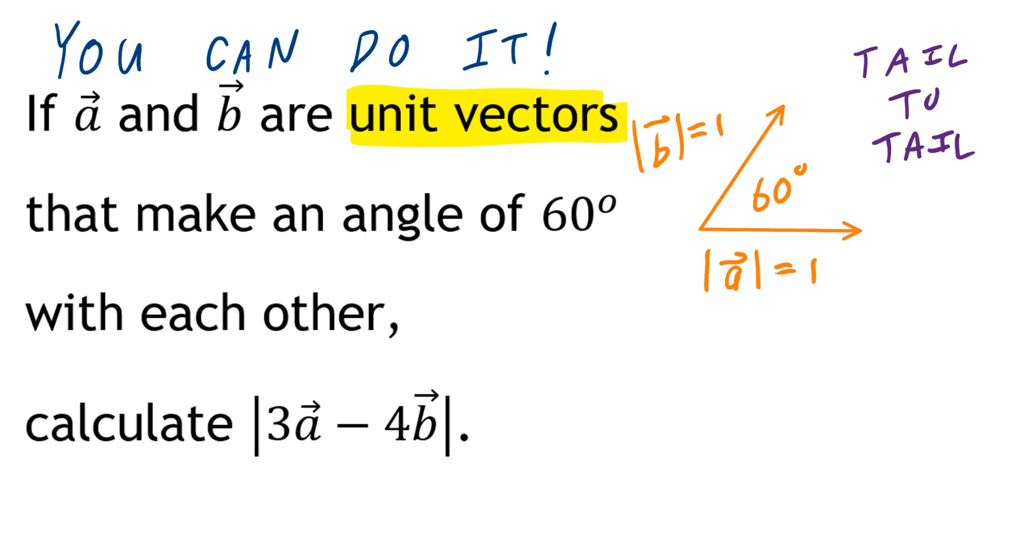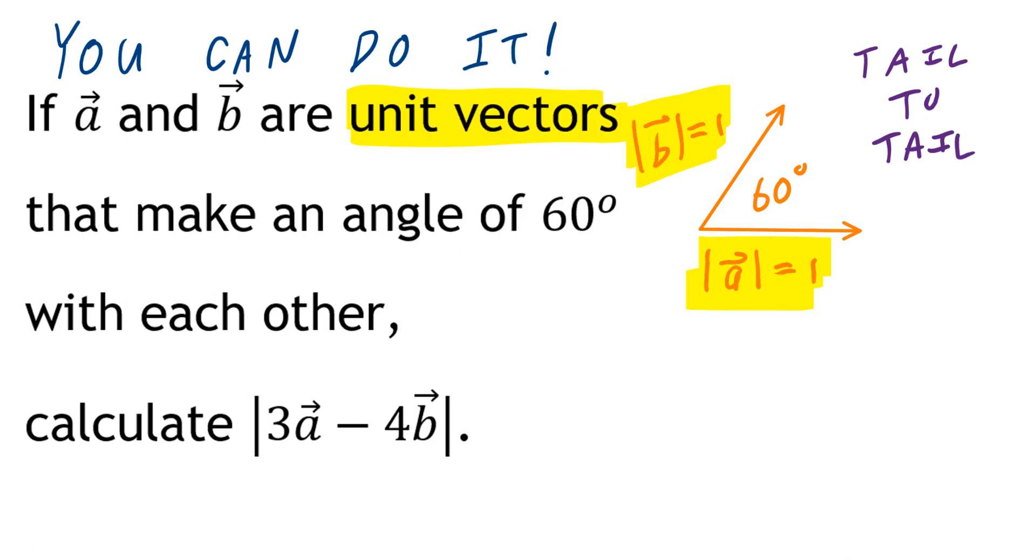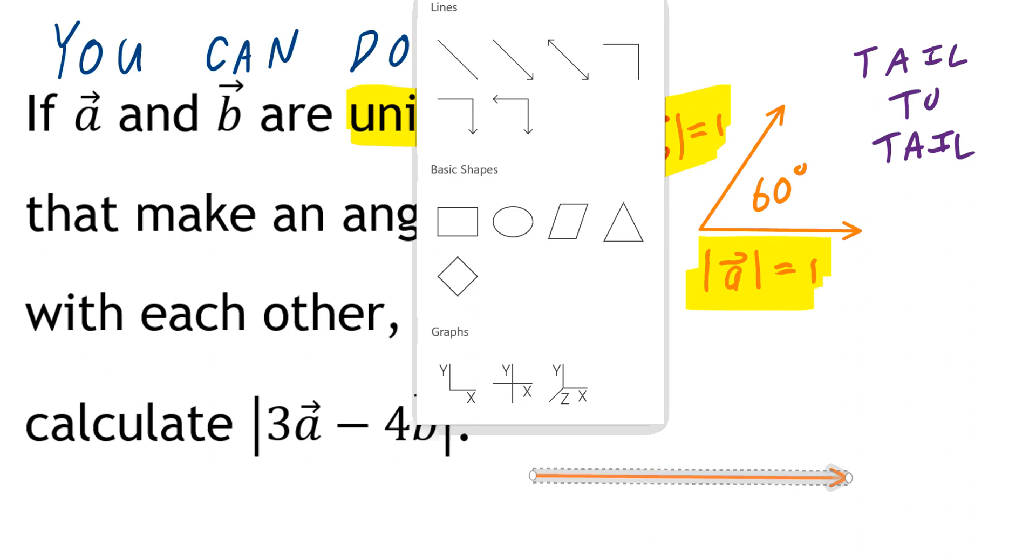Step number 2, draw a second diagram that's going to represent the magnitude of 3 times vector A minus 4 times vector B. So in this case, we're not looking at vector A, but 3 times vector A. Roughly speaking, it's going to look something like that.